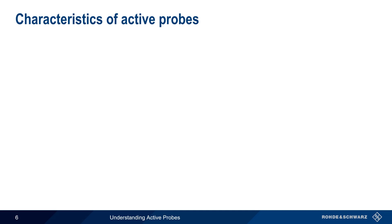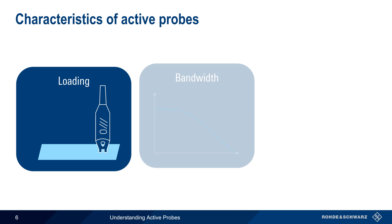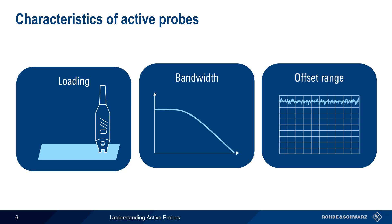On the previous slide we briefly touched on three important characteristics of active probes, namely loading, bandwidth, and offset range. Active probes have significant advantages over passive probes in all three of these areas, so let's take a few moments to explain each of these in more detail.